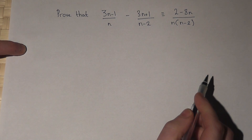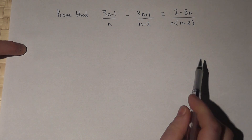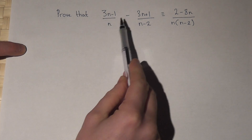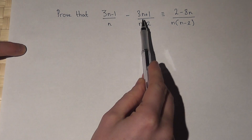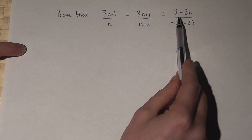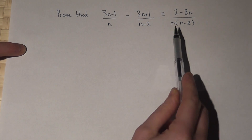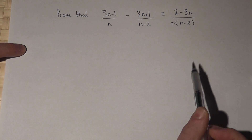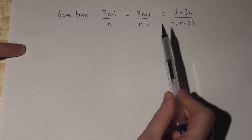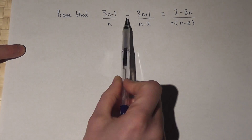This question asks us to prove a result: that if we do this fraction take away this fraction, the answer is 2 minus 8n all over n, n minus 2. So we work out what happens if we work out that, take away that.